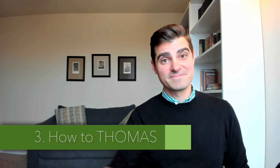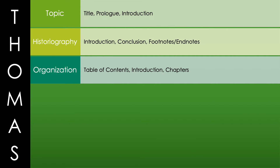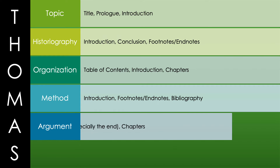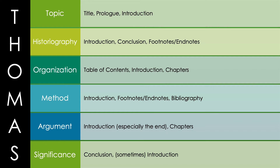So we know about X-raying books and how to find and use book reviews. Now let's dig into the books themselves — how do we get THOMAS from academic monographs? To understand this, it's important to think of our THOMAS model again. We're looking for the topic, the historiography, the organization, the method, the argument, and the significance. And if you think about it, you can find these various elements in very specific parts of the book.